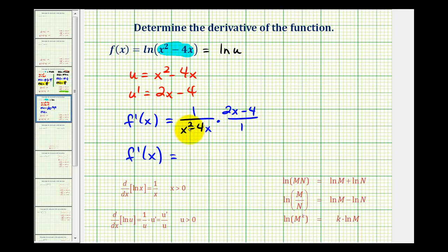This would be over 1. Nothing is going to simplify out here, but we could factor both the numerator and denominator. We'd have 2 times the quantity x minus 2 divided by x times the quantity x minus 4.